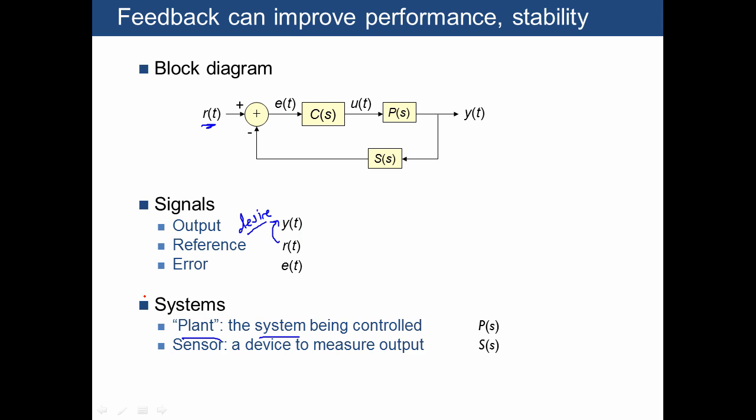Another signal of interest is what we call the error signal, where we measure the output and we compare that with the input, the reference R of T, and that produces an error signal E of T, and we want this to be close to zero.